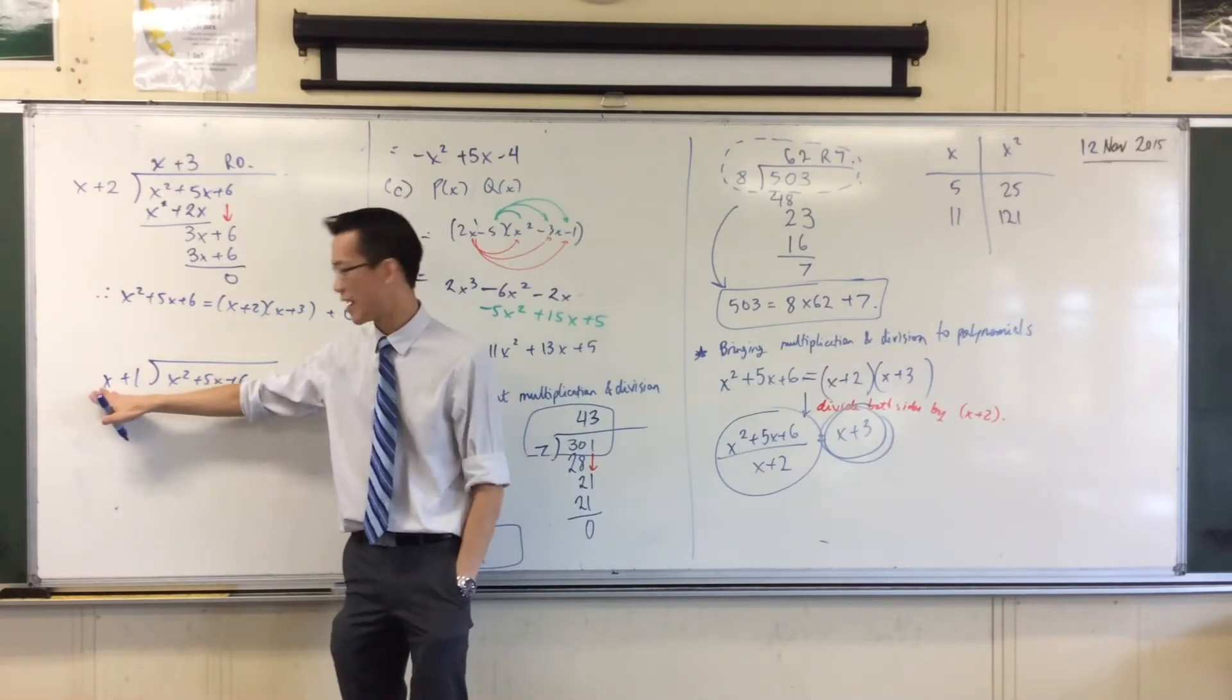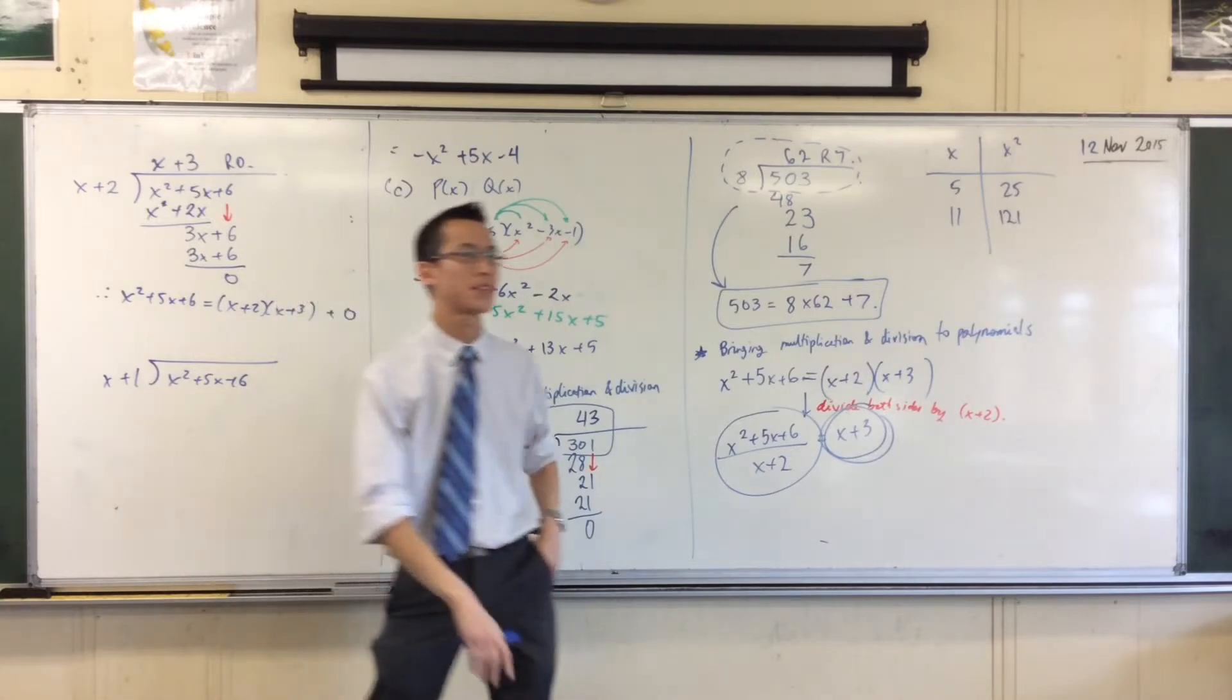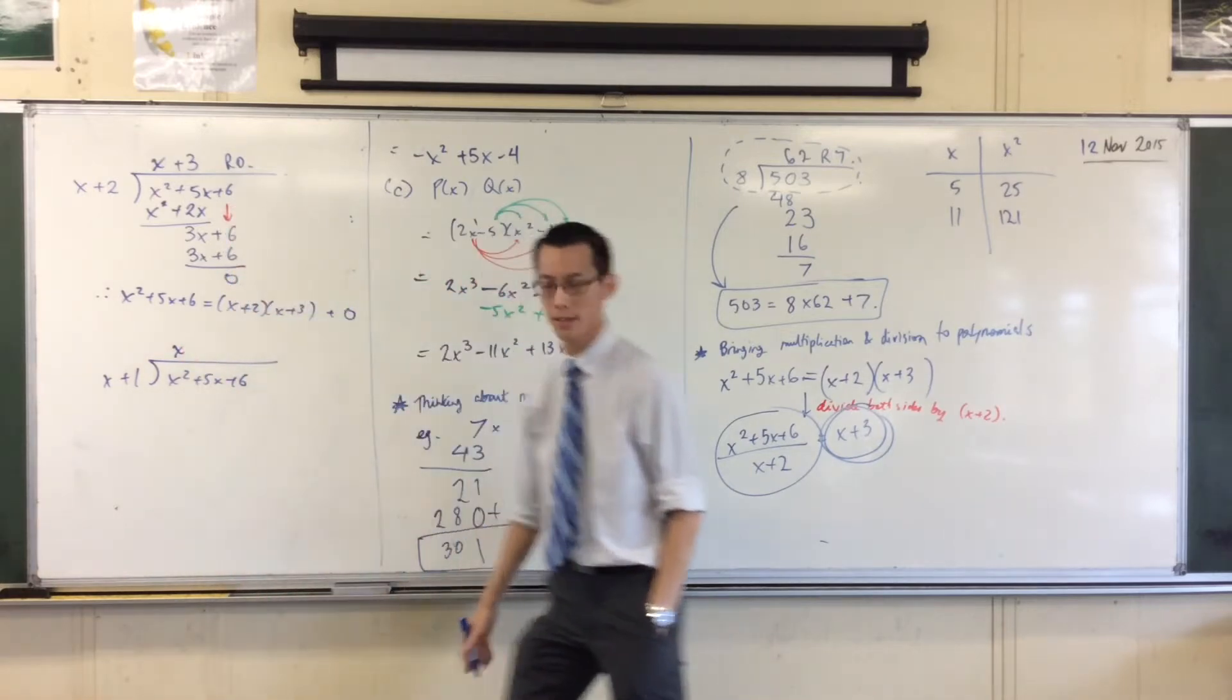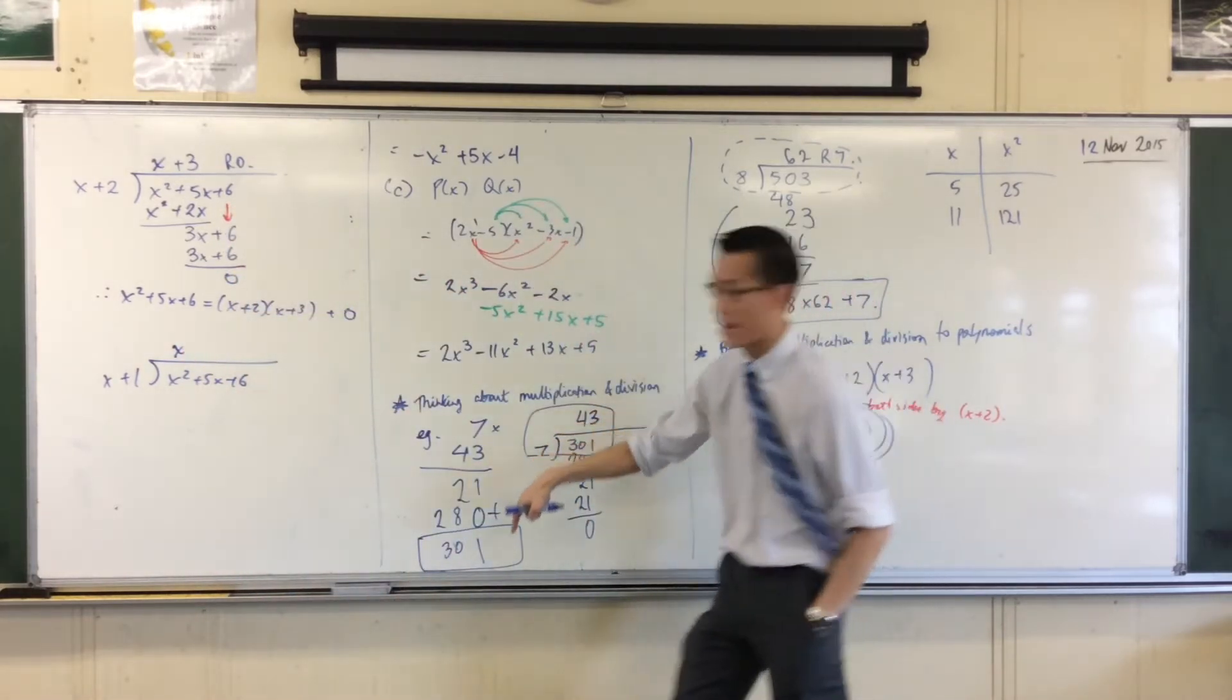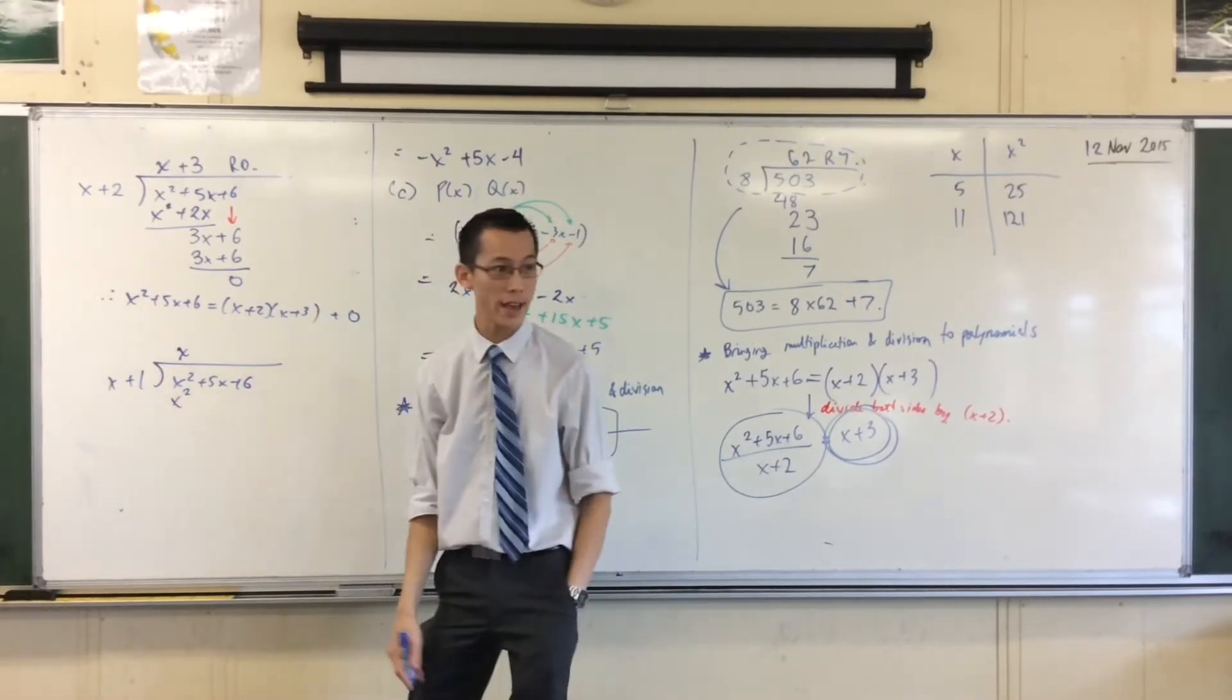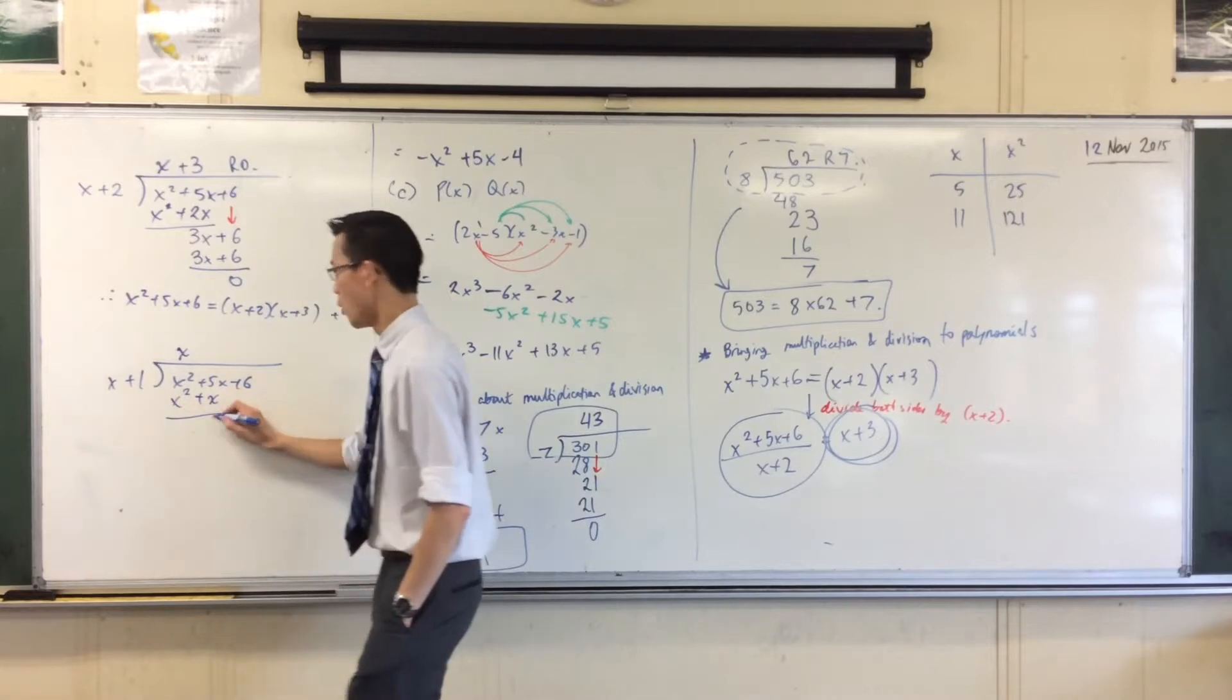The x's are the important parts, right? Plus 1 matters, but not as much. So I say x, how many times can I go into x squared? x times. What do I do with that x? Just like before, I multiply it down. That gives me x times x is x squared. x times 1 is just plus x. Fantastic.